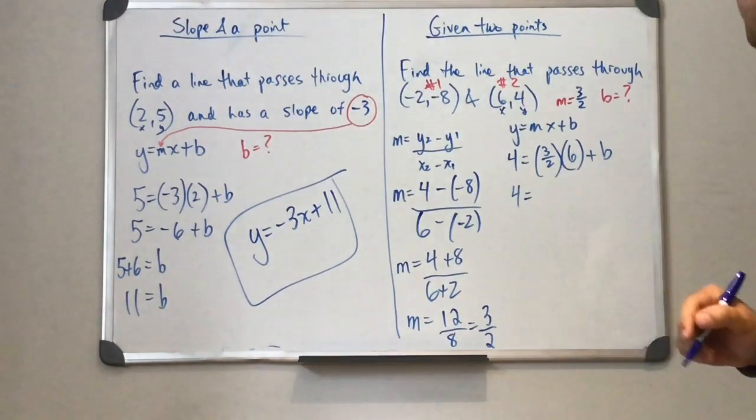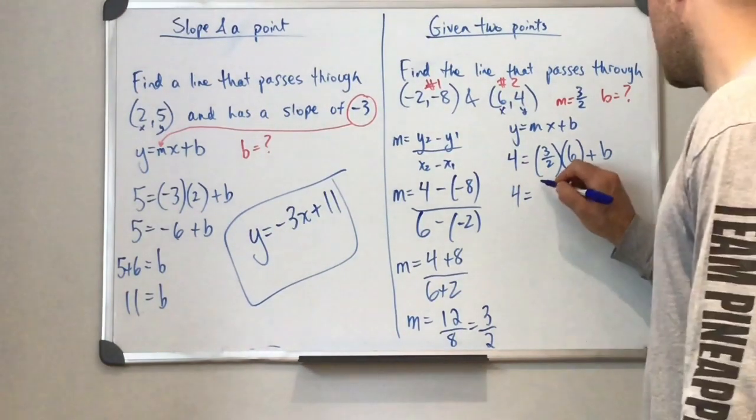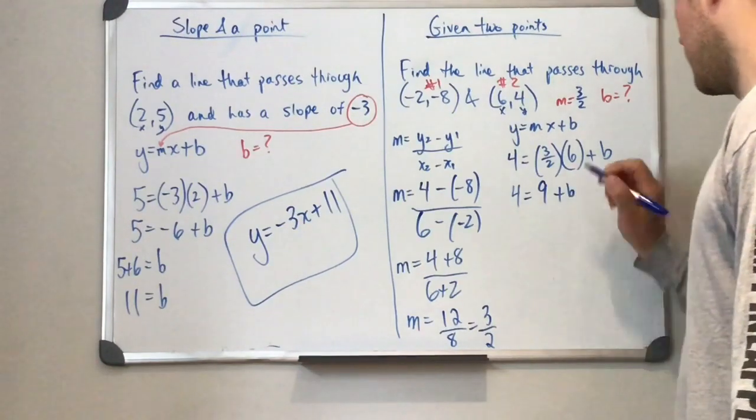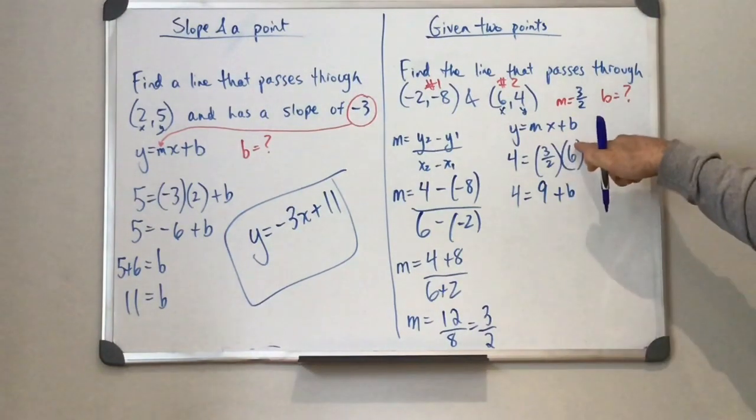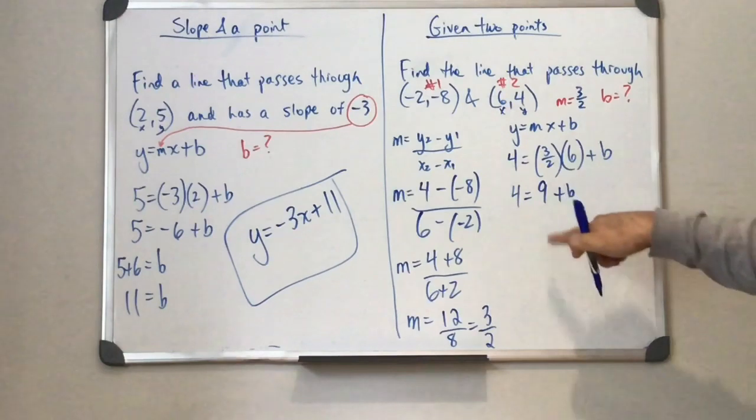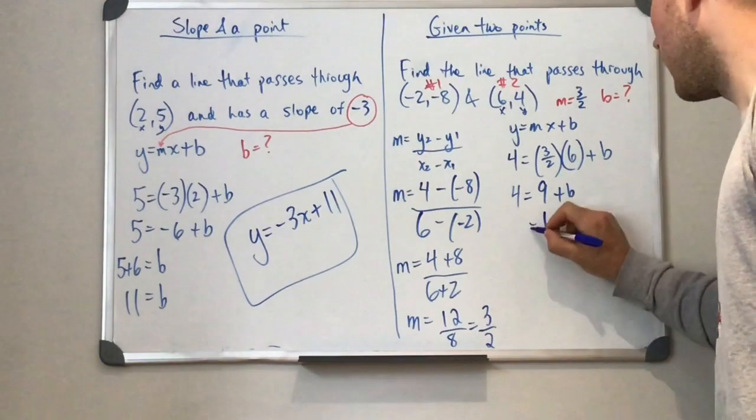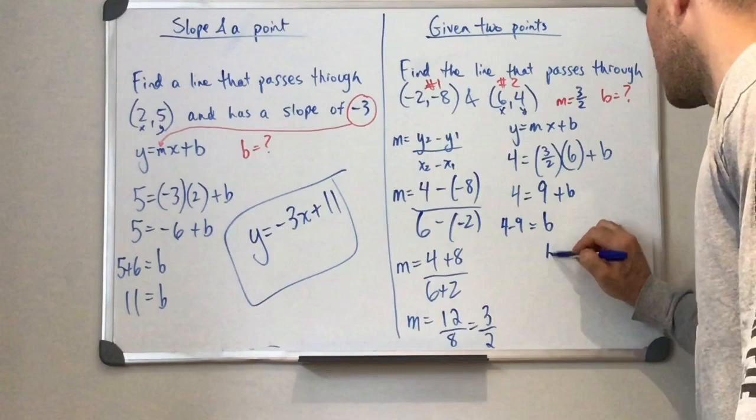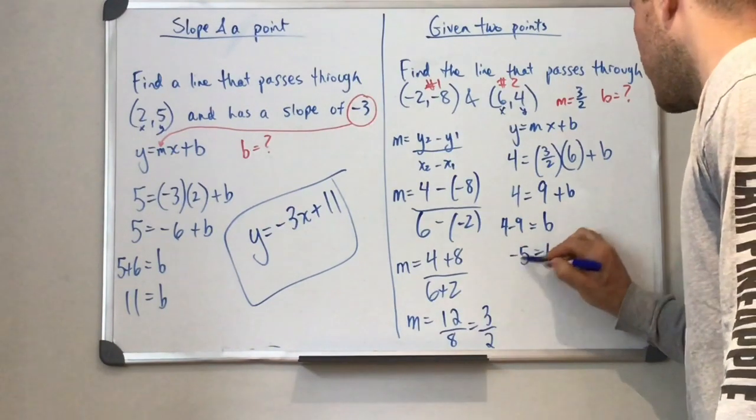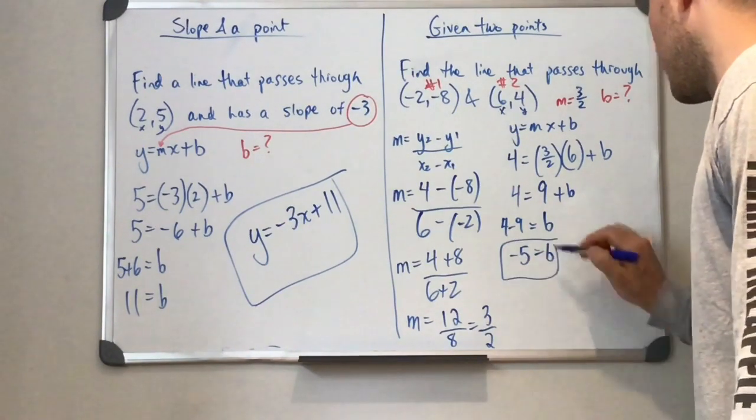So we have four is equal to three halves times six plus b. Three halves times six, that's going to be 18 over two, which is nine. Okay, so three times six is 18, 18 divided by two is nine. And then just like before, we're going to bring that nine over.